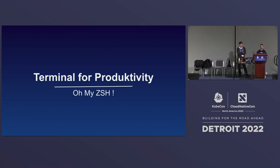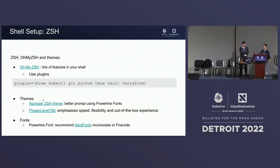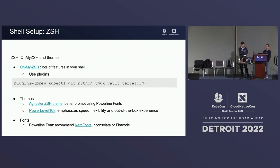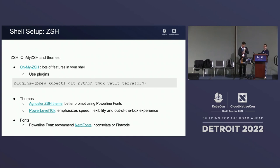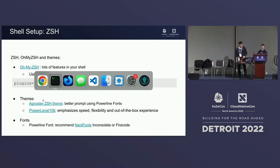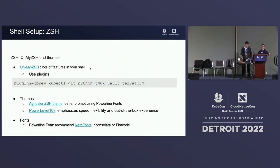Now we're faster with kubectl and have hints. But you can go even beyond that. This talk is based on ZSH, and we picked OhMyZSH. OhMyZSH is a framework that you install in your shell — it's going to bring up a lot of things already set up, like shortcuts. It has plugins. And there are themes you can apply. I used Agnoster's ZSH theme for a long time, and then I discovered PowerLevel10K.